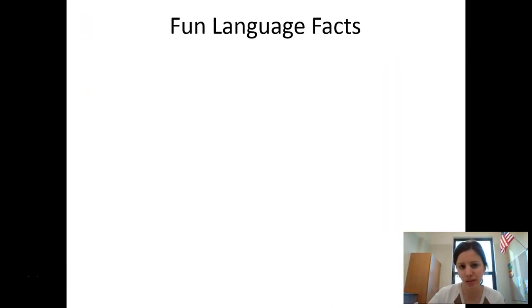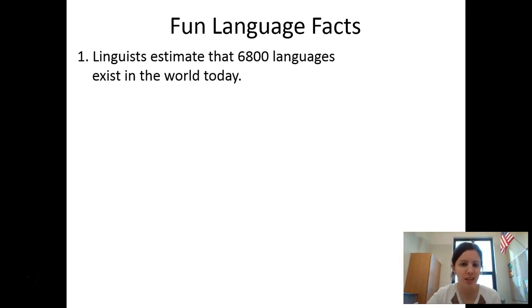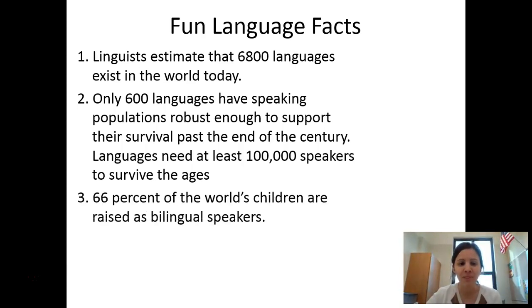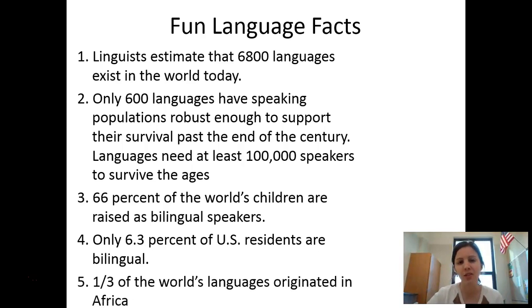So here are some fun facts about language just to get us started. There are about 6,800 languages in the world today. But only 600 of them have speaking populations that are big enough to continue them past the end of the century, because you need about 100,000 people for the language to be able to survive. 66% of the world's children are raised as bilingual speakers, but only 6.3% of the United States residents are bilingual. So the United States is really behind when it comes to learning language or learning multiple languages. And then lastly, a third of the languages that are spoken in the world originated in Africa.